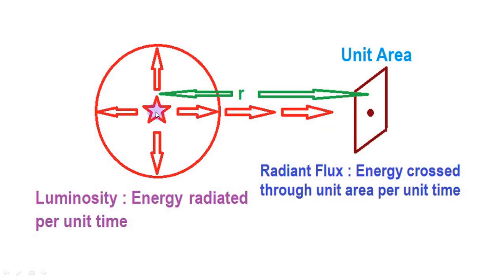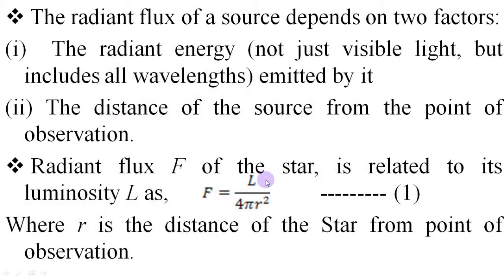Suppose a star is at a distance r from the point of observation. Let us draw an imaginary sphere of radius r around the star. The surface area of that sphere is 4πr². Now, energy radiated by the star in all directions is L which is luminosity. Out of that energy crossing through unit area of that imaginary sphere is L by 4πr² which is nothing but radiant flux. Clearly, this relation shown in equation one, F is equal to L by 4πr².